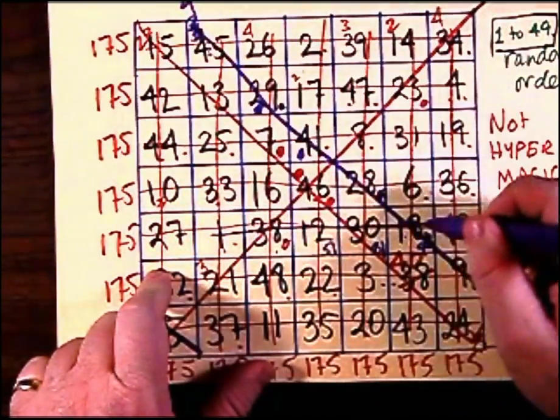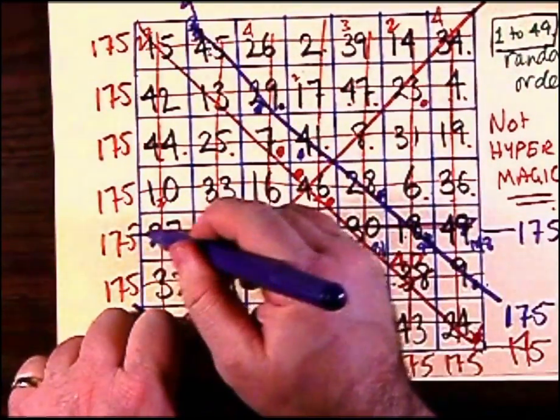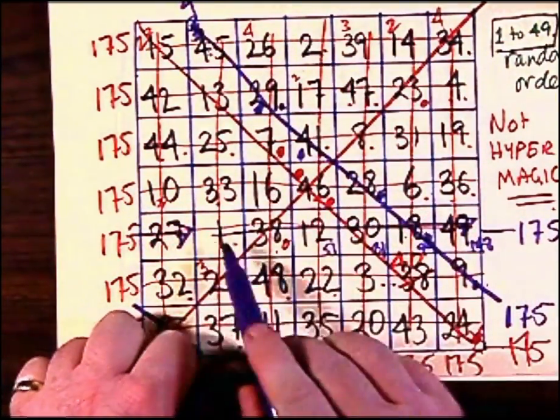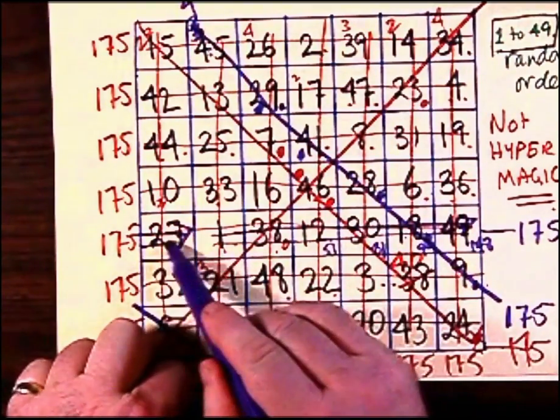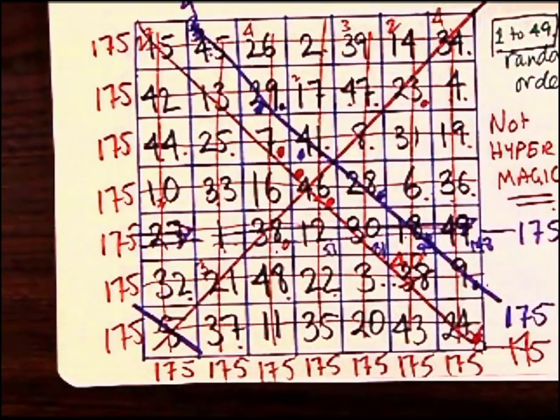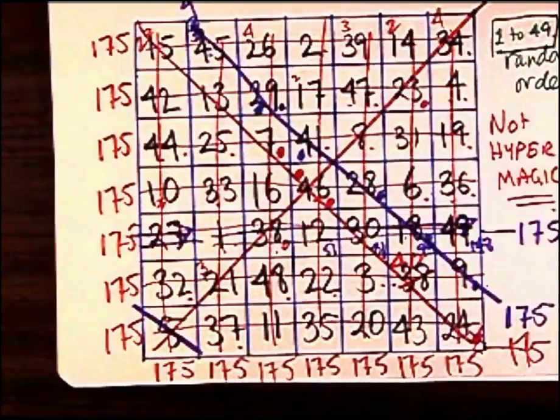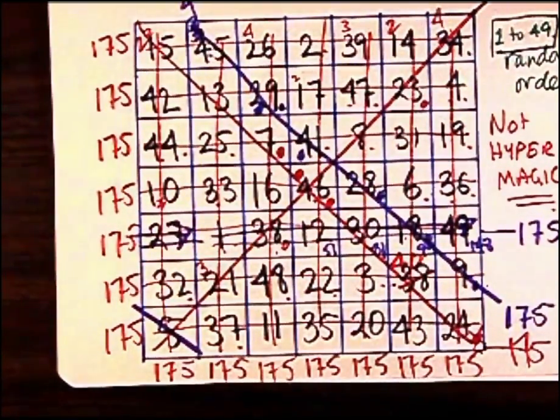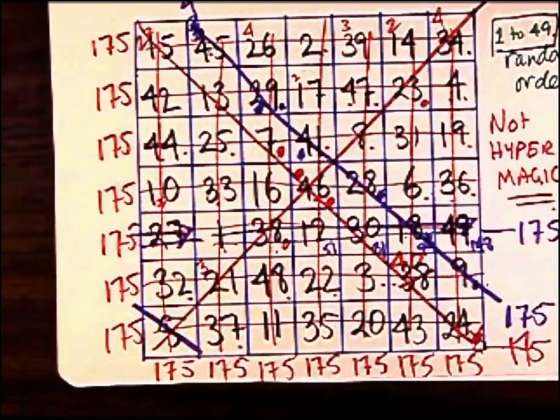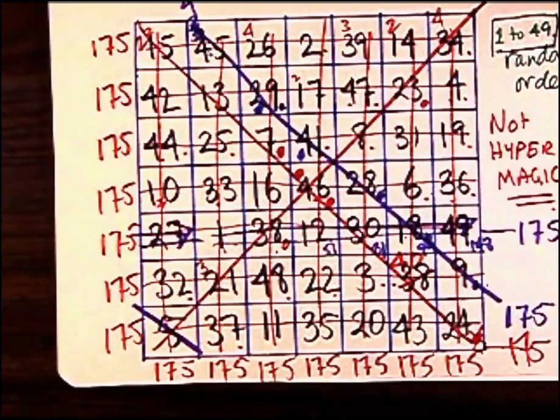But it works if you imagine this square next to itself. If you duplicate this square and place another square exactly like it, number for number, row for row, column for column, right next to itself, you will also get on any diagonal 175. And that's what that blue line shows. But it's not hypermagic, meaning that there are not many symmetrical combinations that will add up to 175, unfortunately.